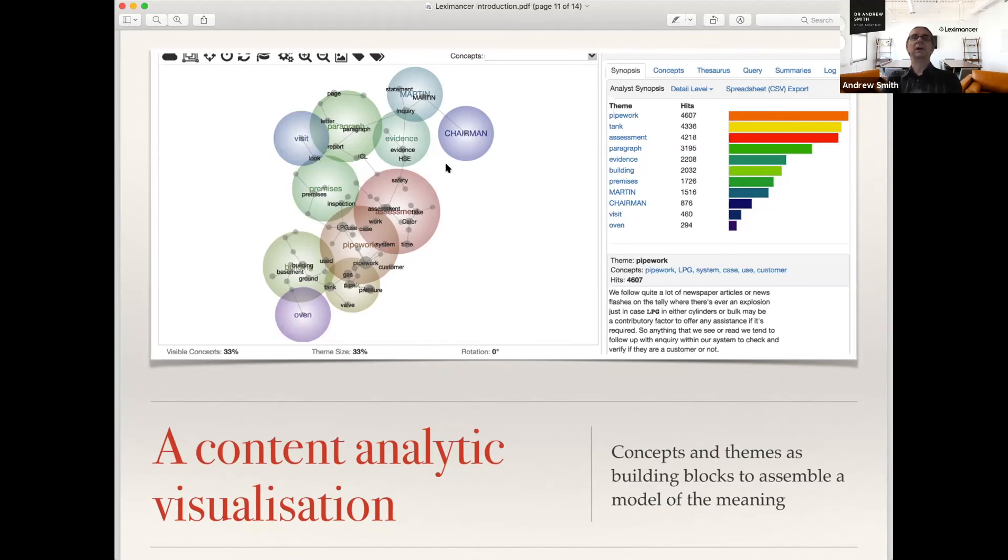You can see the clues of what's there. It's like having a map of an undiscovered continent. It shows you where the mountains and rivers and lakes are, and then you can go exploring those in the text. That's probably all I'll talk about the content analytic background.